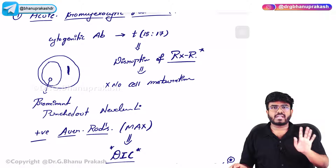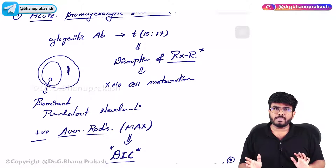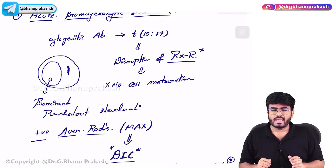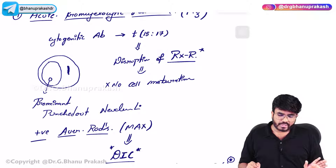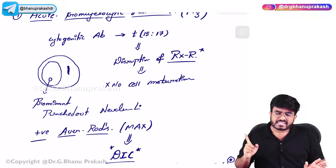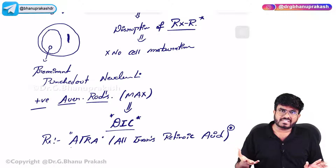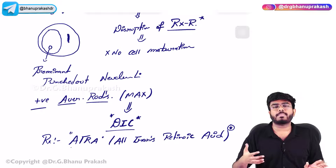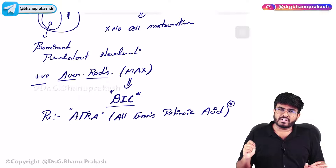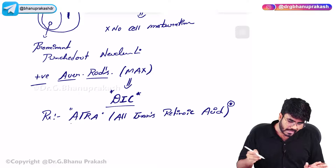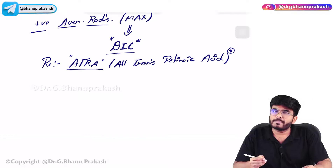Acute promyelocytic leukemia: it's a type of AML. According to a different classification, it is called M3 - M3 type of AML. Translocation 15-17 leads to disruption of the retinoic acid X receptor, so there is no maturation of cells into proper myelocytes and granulocytes. These cells show positivity for myeloperoxidase, maximum Auer rods, prominent punched-out nucleoli, and the treatment is all-trans retinoic acid.